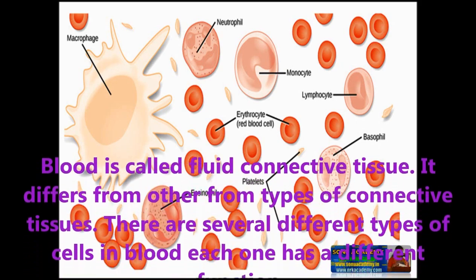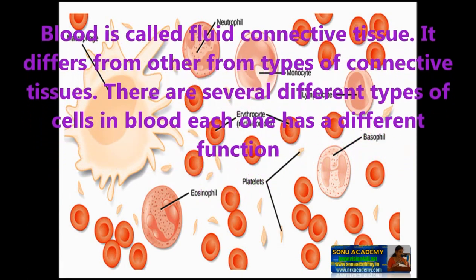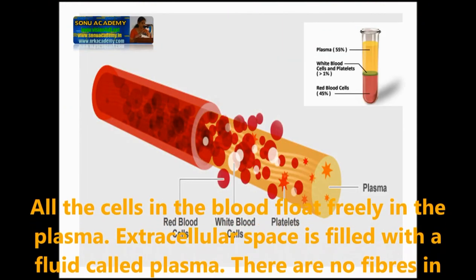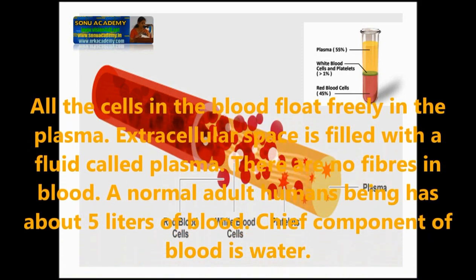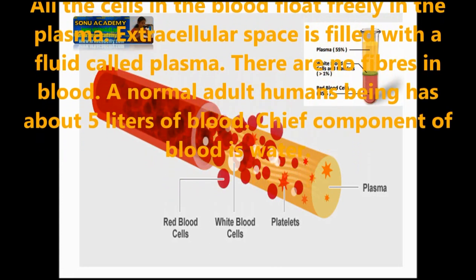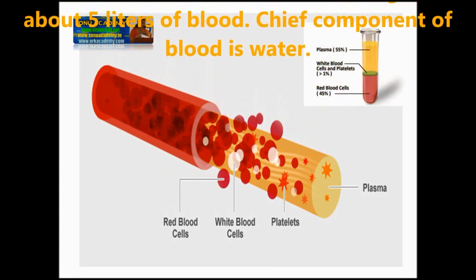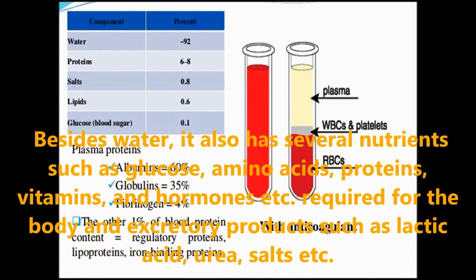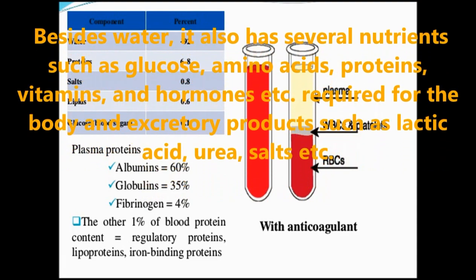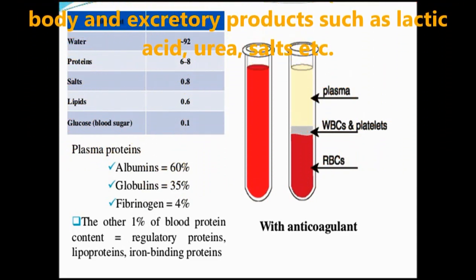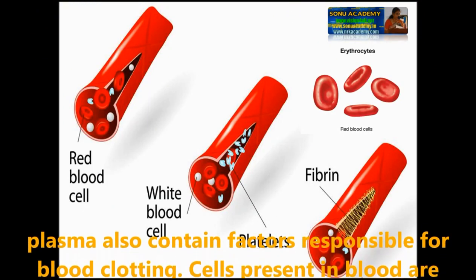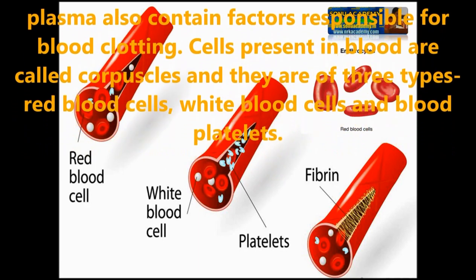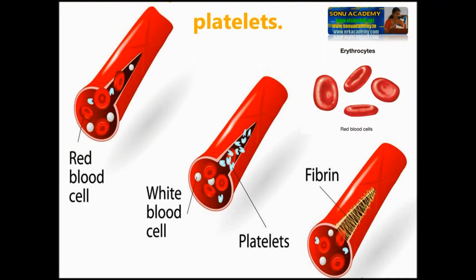Blood is called fluid connective tissue. It differs from other types of connective tissue as the cells float freely in the plasma, and there are no fibers in the blood. A normal adult human has about 5 liters of blood. The chief component in plasma is water. Besides water, plasma also has several nutrients such as glucose, amino acids, proteins, vitamins and hormones, as well as excretory products such as lactic acid, urea and salts. Plasma also contains factors responsible for blood clotting. Cells present in blood are called corpuscles and are of three types: red blood cells, white blood cells and blood platelets.